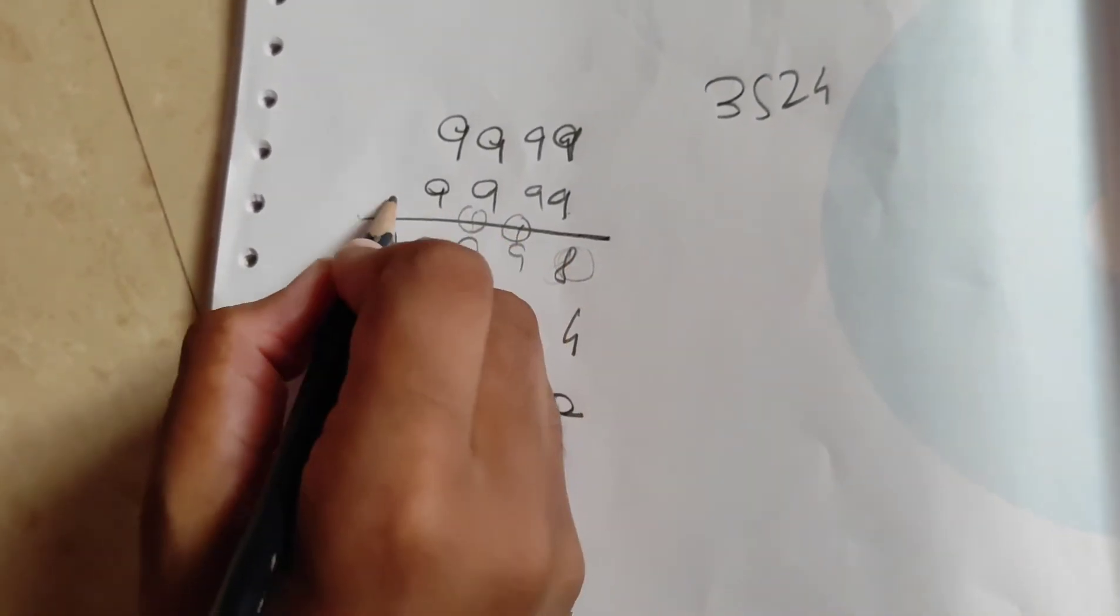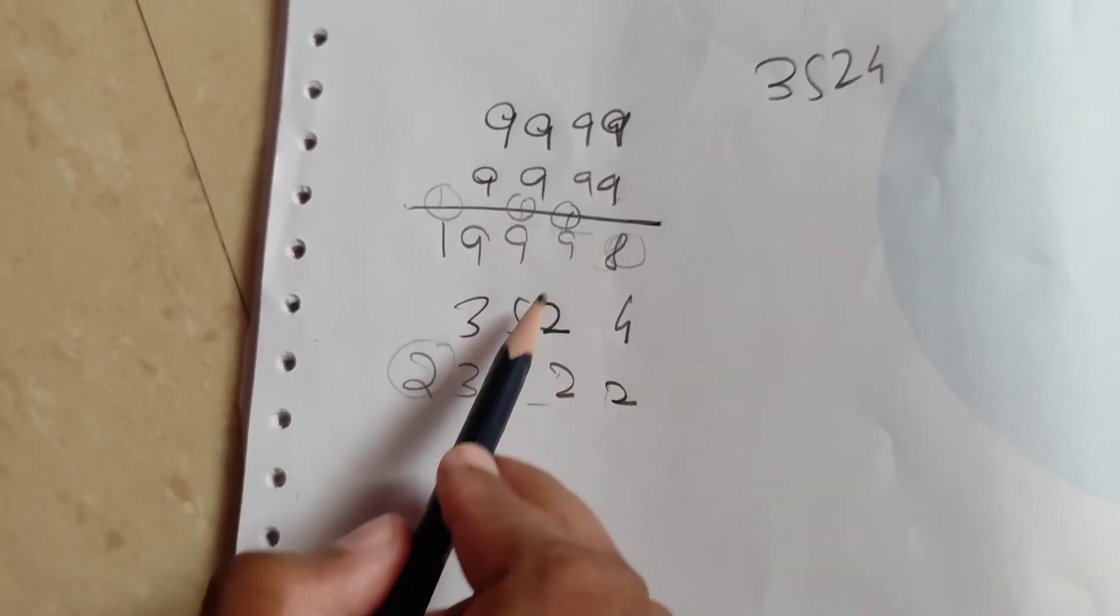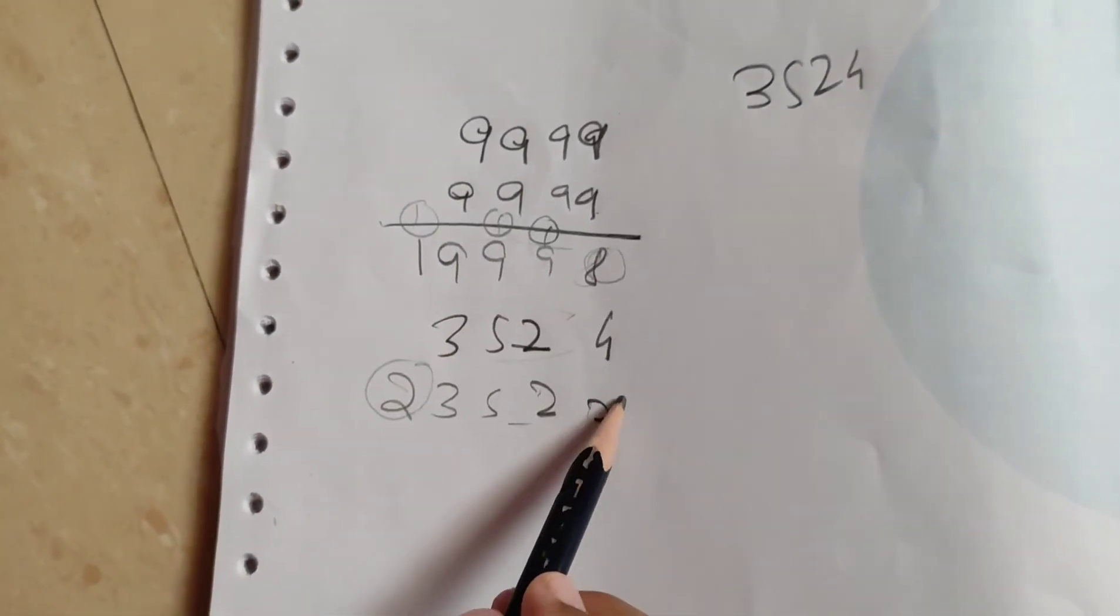Same thing happens again and again and goes on. Except here, 1 comes in, so 2. That's why we write 2. Then we write these 3 digits as it is and subtract 2.